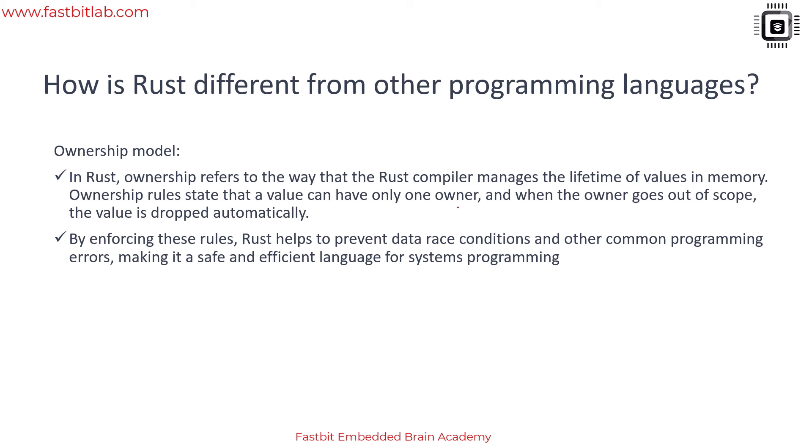In the previous lecture you saw some of the features of the memory safety aspects of Rust programming language like borrow checking and deallocating heap memory when the variable goes out of scope. There is one more interesting feature: the ownership feature or ownership model in Rust.